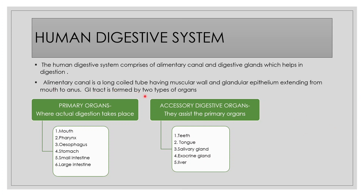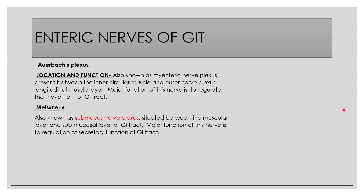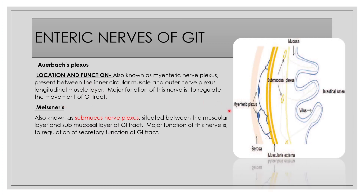The alimentary canal is a long coiled tube having muscular walls and glandular epithelium extending from mouth to anus. There are various nerves involved in GIT. The first nerve is the Auerbach's plexus and the other is the Meissner's plexus. The Auerbach's plexus regulates movement through the GIT, while the Meissner's plexus is responsible for secretory function in the GIT.